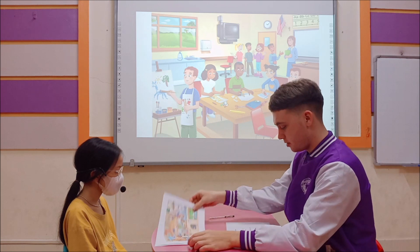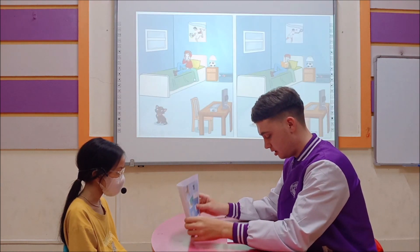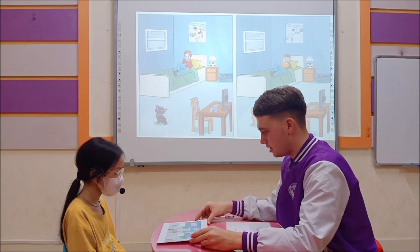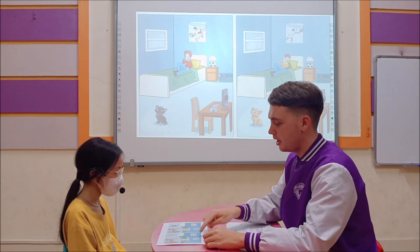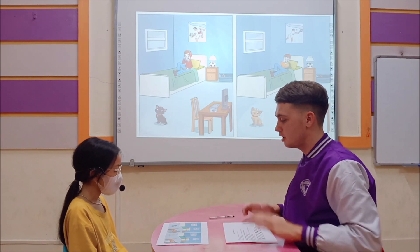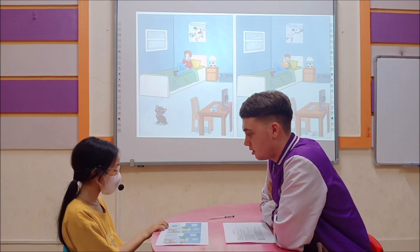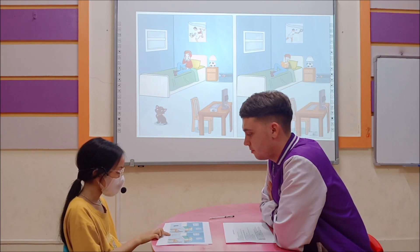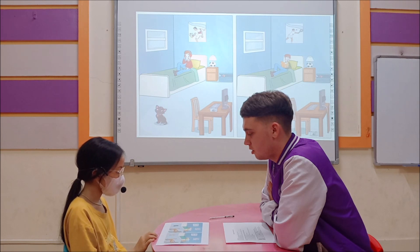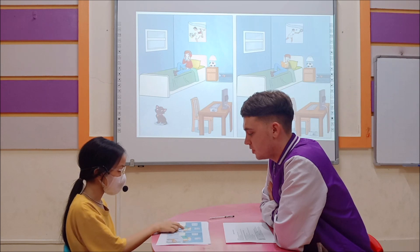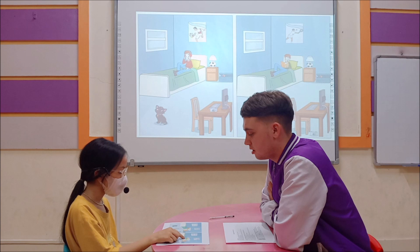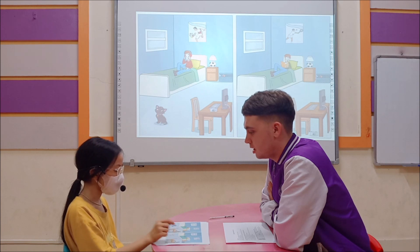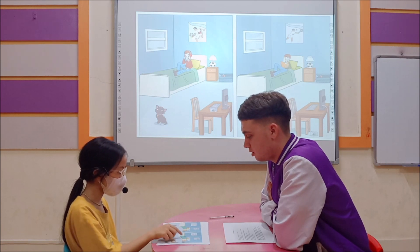Now, let's go to the next picture. Tell me the differences between picture A and picture B. In picture 1, the cat is black but in picture 2, the cat is yellow. In picture 1, he listens to music but in picture 2, he is reading a book.